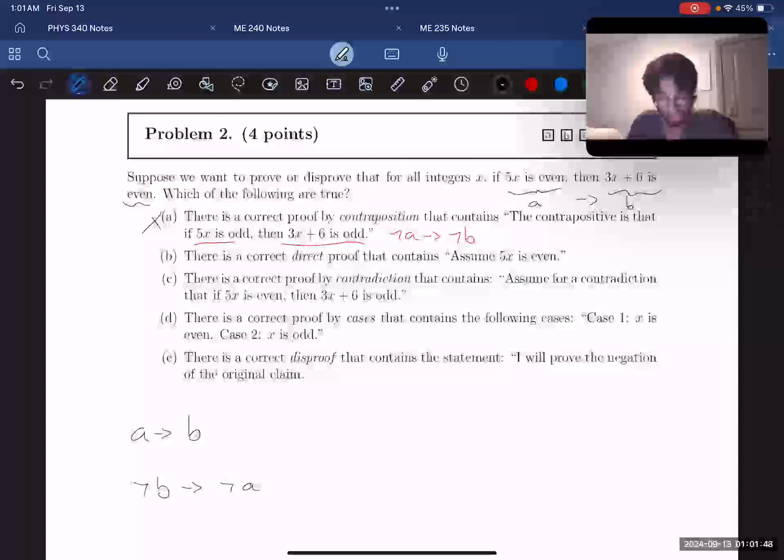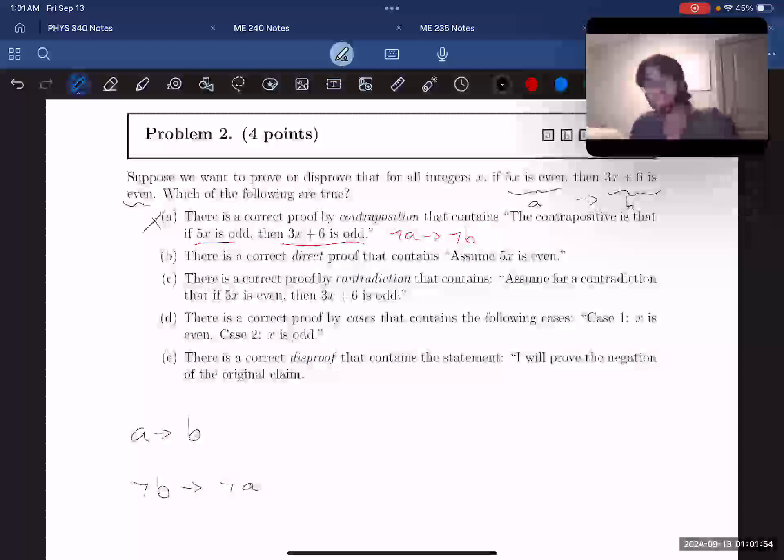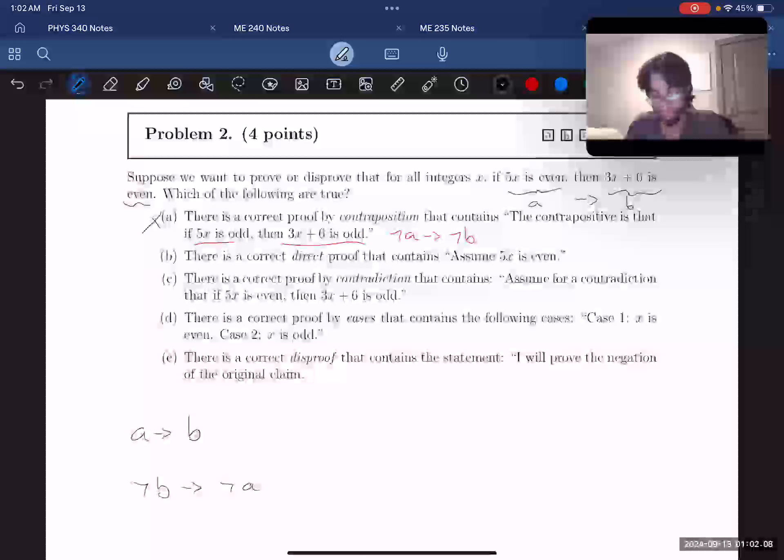Answer B says that there's a correct direct proof that contains assume 5x is even. How do we do direct proofs with if-then statements? The whole point of direct proofs is that we're going to assume the if part and then prove the then part. What would assuming the if part look like here? We would be assuming our A statement and we would say assume 5x is even. That's clearly what it says in part B. So B is correct.